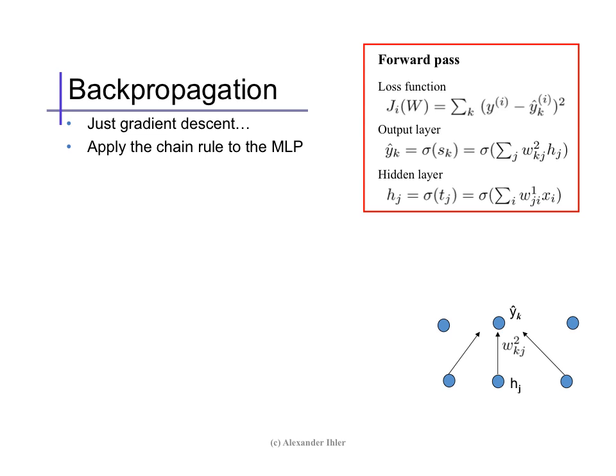We'll write some notation here. The loss function is the sum of squared errors over the output vector, which we'll index with k. The output layer is a smooth nonlinearity sigma of a linear response sk. So sk is a weighted linear combination of the hidden nodes. And finally, the hidden nodes are an activation function of a linear response t, which is a weighted combination of the input features.